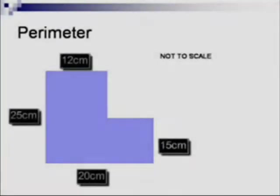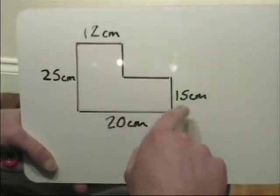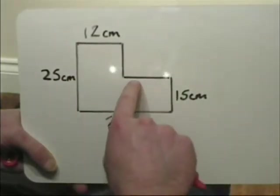To work out the perimeter of a shape, you need to add up all the sides. This sounds easy enough, but often some lengths will be missing. I have all this information here to help me work out what the missing measurements are.